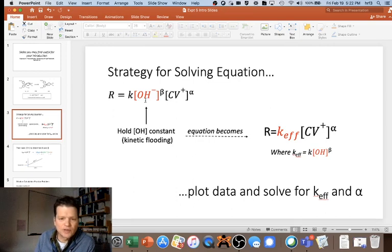If the hydroxide is essentially constant, then the rate becomes this new constant we'll call k_eff, times just the concentration of crystal violet to its order alpha, where k_eff is defined as k times [OH⁻]^β.